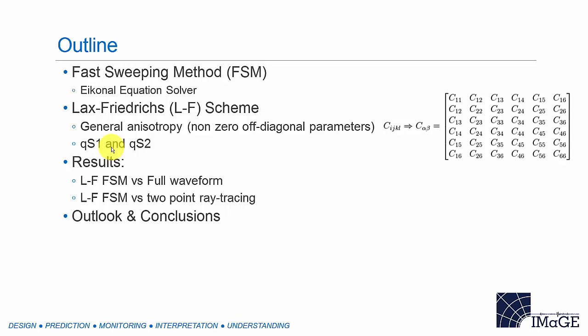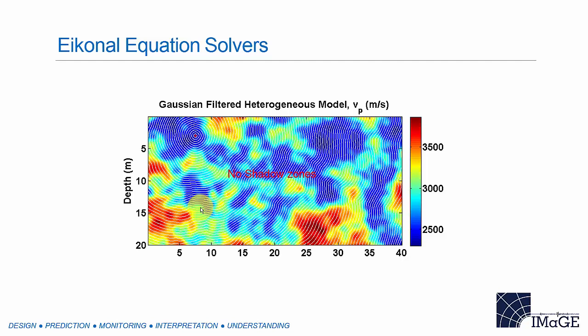We compared our fast sweeping method with the full waveform solution to understand which part of the wave field we are tracking. We also compared the fast sweeping method with two-point ray tracing, because now we have the full wave field — the ray path can be traced by following the negative gradient of the travel time. Without multipathing, multibranch, and shadow zone issues, the ray path from fast sweeping is almost identical to two-point ray tracing. In the presence of non-uniqueness, it has no effect on the fast sweeping method, whereas two-point ray tracing requires a global search technique, which complicates the formulation. I'll conclude with some possible applications of these techniques.